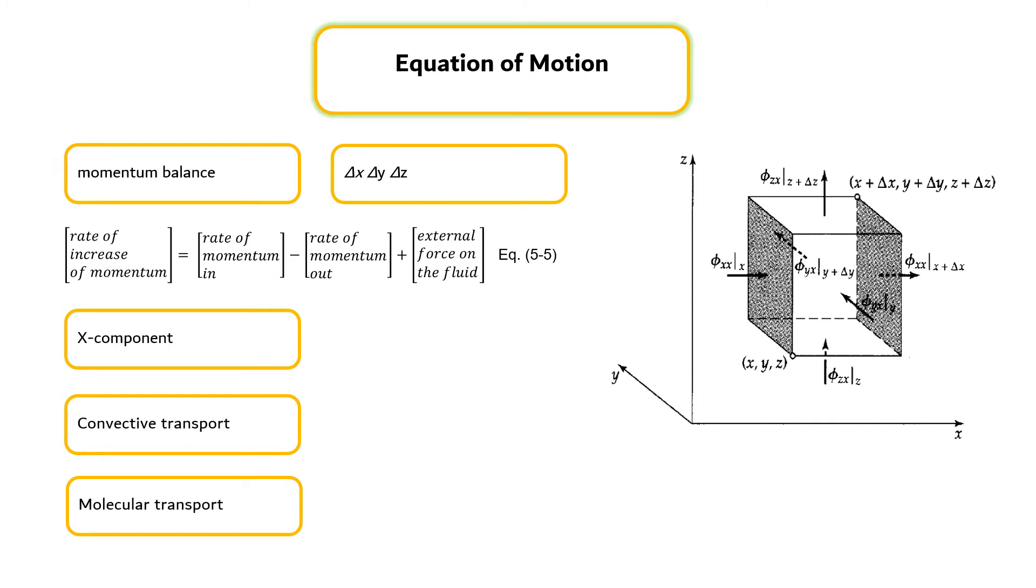The rate at which the x-component of momentum enters across the shaded phases at x by all mechanisms, both convective and molecular transport, is shown in the figure, and the rate at which it leaves the shaded phase at x plus delta x. The rate at which x-momentum enters and leaves through the phases at y and y plus delta y is also shown in the figure. Similarly, the rate at which x-momentum enters and leaves through the phases at z and z plus delta z are shown in the figure. These contributions are added to get the net rate of addition of x-momentum as shown in Equation 5.6.